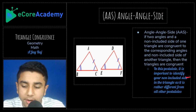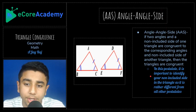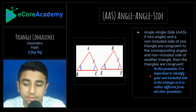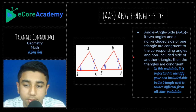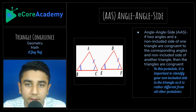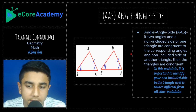It's very important to identify that your non-included side is what's being used, so you don't confuse AAS with SAS. If the side were the included side between the two angles, it would be defined as SAS — not AAS. Keep that distinction clear.